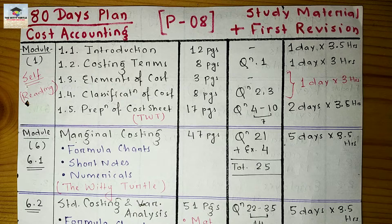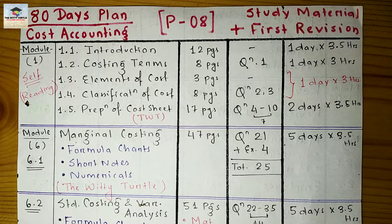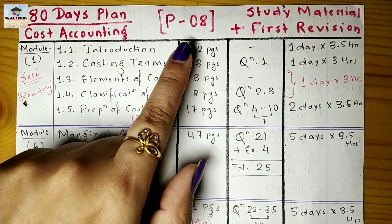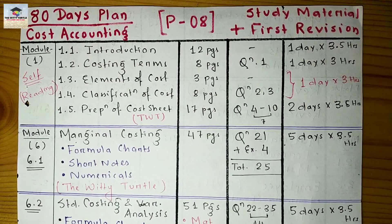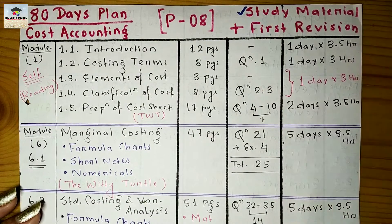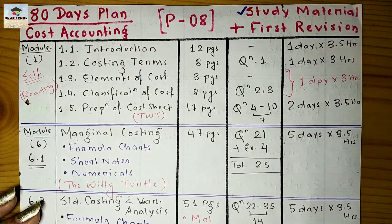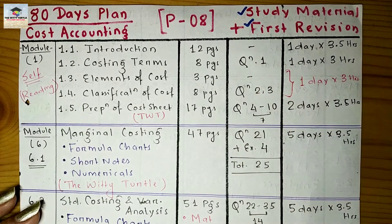Hi everyone, thank you so much for watching my channel, The Witty Turtle. As you may know, two papers of the new CMA Inter syllabus 2022 are out. One of those is Paper Number 8, which is Cost Accounting. Here I am with an 80-day plan for Paper Number 8 where you can cover your entire study material, and along with that, your first revision of the entire paper will be done.